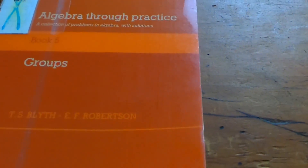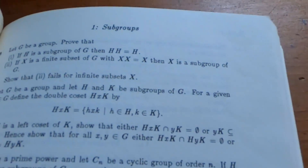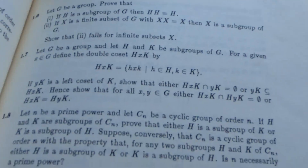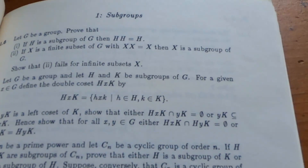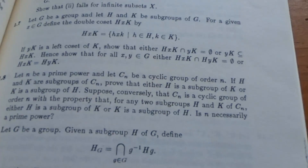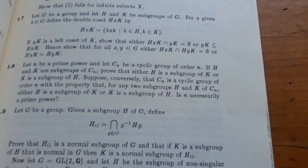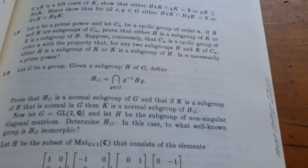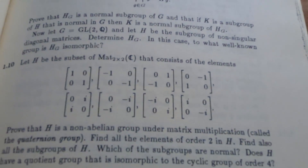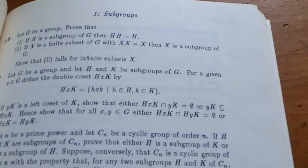This next book is also Algebra Through Practice, this one on groups. It has full solutions to problems in group theory — pretty hardcore, with a lot of really good problems and detailed proofs. The number one downside to the Algebra Through Practice series is that the books are expensive. But otherwise, if you can get them, it's totally worth the money.